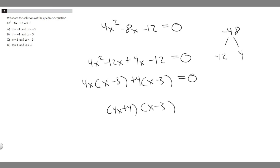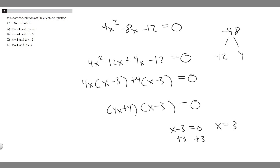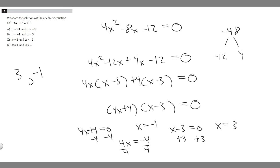All we've got to do now is solve for x. We need to find when each factor equals 0 to get our two values. For the first factor: x minus 3 equals 0, so we add 3 to both sides and get x equals 3. For the second factor: 4x plus 4 equals 0, subtract 4 from both sides to get 4x equals minus 4, then divide by 4 to get x equals minus 1. So our two values are 3 and minus 1. Looking at the answer choices, option B is x equals minus 1 and x equals 3, so the answer is B.